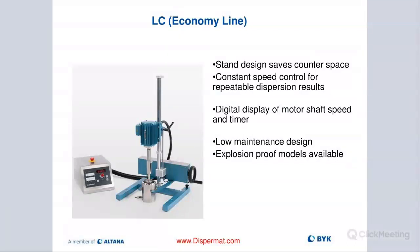I'm not a fan of the LC personally, because I like to have the electric lift capability that allows me to lock in the right blade height in my container. On the LC, you have to lift by opening or closing a lever next to the motor, allowing you to move the motor up and down the column. It's comparatively inexpensive as a lab-scale solution. Explosion-proof models are available. All the explosion-proof models are three-phase machines, running on 400-volt or 480 or 208-volt, depending on the power in your building.